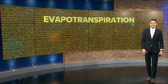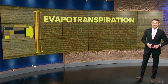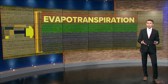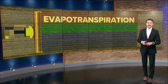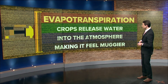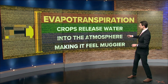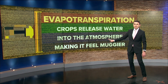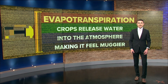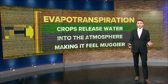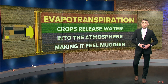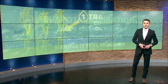Now, evapotranspiration is a big word, but it has a simple explanation. Essentially, it has to do with how corn and other crops can impact our humidity by emitting moisture — what's also known as corn sweat. Just like you sweat going for a walk outside, a corn crop sweats as well, releasing moisture into the atmosphere.